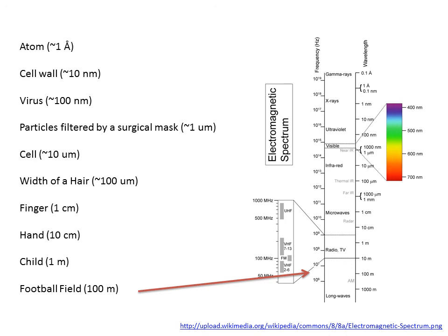and finally AM signals that you get on your radio, somewhere on the order of a wavelength near a football field long. So we see that really the big difference between all of these is just the wavelength of light.